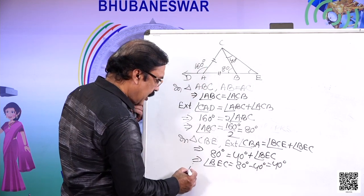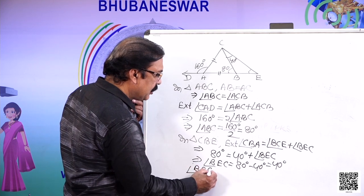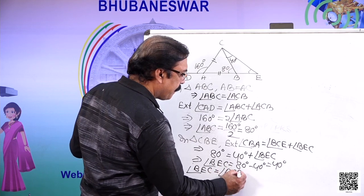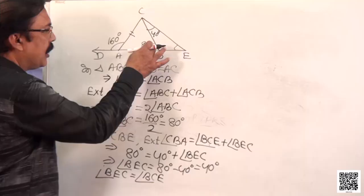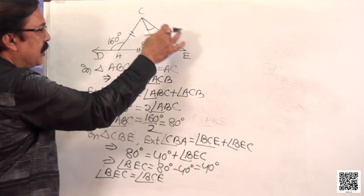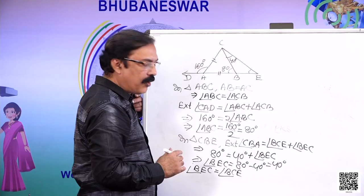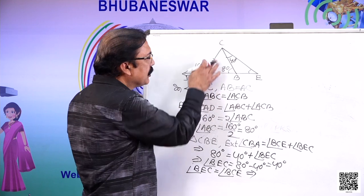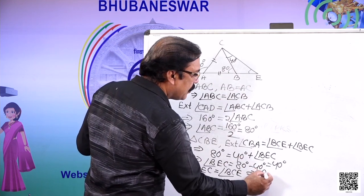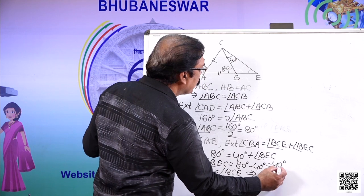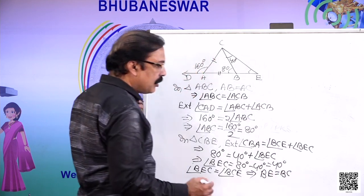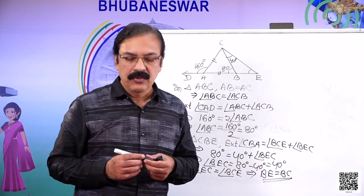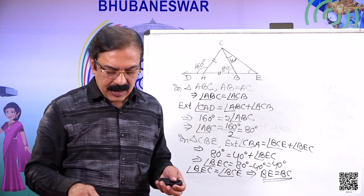This shows that angle BEC is equal to angle BCE. In triangle BCE, since angle BCE and angle CEB are equal, their opposite sides are also equal. That means side BE is equal to side BC. This was to prove, and we proved this. Here also, we applied the same exterior angle theorem.